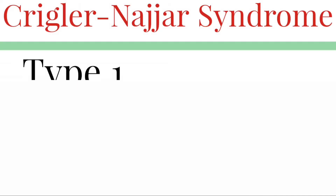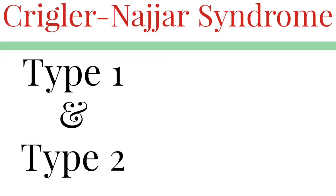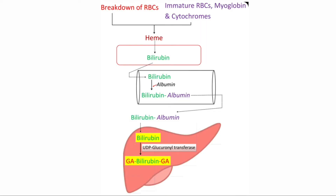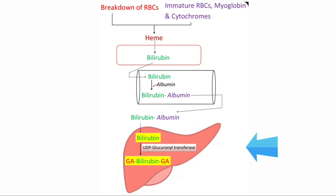This condition is classified into two types: type 1 and type 2. Type 1 Crigler-Najjar syndrome is a rare type and it is inherited as an autosomal recessive condition. There is complete absence of UDP-glucuronosyltransferase activity, so the enzyme is completely absent.